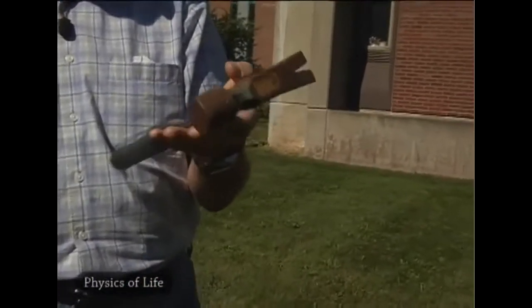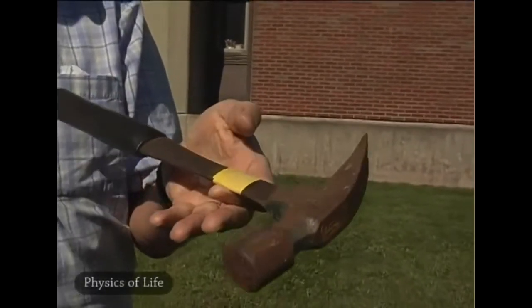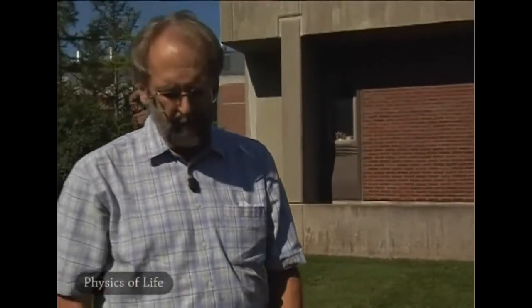Today we're going to be throwing two hammers that have different centers of mass to them. We're going to be tossing just an ordinary roofer's hammer here, and the yellow tape here points us to where the center of mass is. It's not perfect, but it's about there. You can see that it's balanced there.